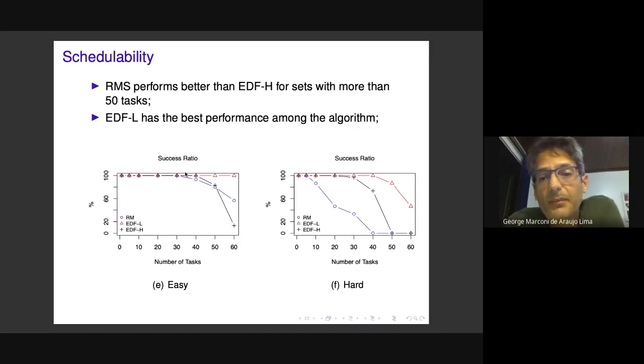For schedulability, we see degradation in accepting systems. Some systems miss deadlines when executing with EDF-L and EDF-H, but EDF-L performs much better than the heap-based EDF-H. Rate monotonic scheduling performs quite poorly even for easy tasks.